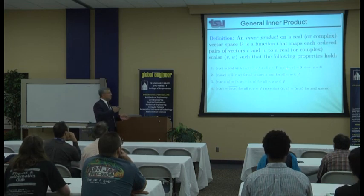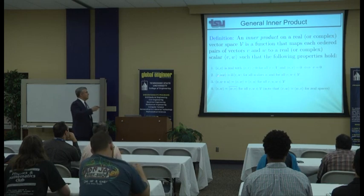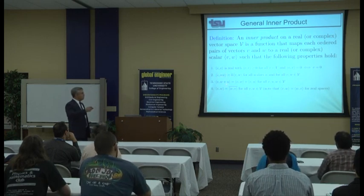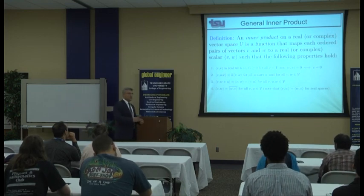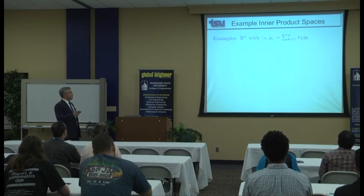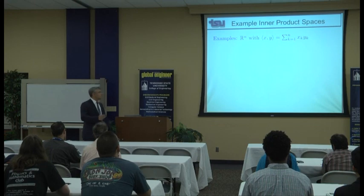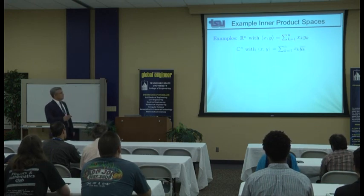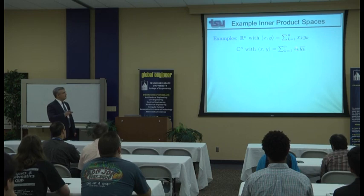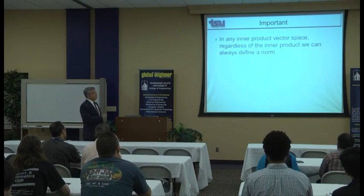An inner product on a vector space V is a function mapping each ordered pair of vectors to a scalar satisfying four properties: the inner product of a vector with itself is always real and non-negative, and zero iff the vector is zero; plus three additional properties ensuring a well-defined inner product. In Rn, the inner product of x and y is the sum of the products of corresponding components. In complex numbers, it is the sum of xk times the conjugate of yk.